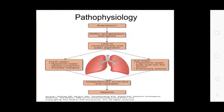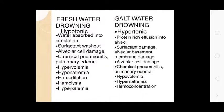Pathophysiology of drowning: submersion triggers laryngospasm and apnea, then loss of consciousness and water aspiration. In fresh water: hypotonic water dilutes surfactant, causing intrapulmonary shunts and V/Q mismatch. In salt water: hypertonic water pulls fluid into the alveoli causing pulmonary edema, then hypoxemia and hypoxia. Fresh water leads to hypervolemia, hemodilution, hyponatremia, and hemolysis, while salt water leads to hypovolemia, hypernatremia, pulmonary edema, and chemical pneumonitis and alveolar basement membrane damage.